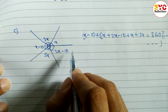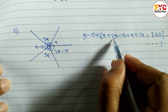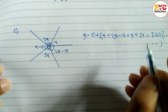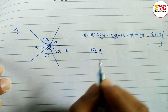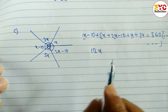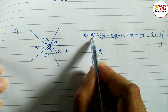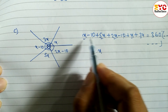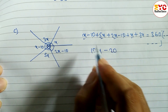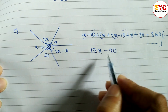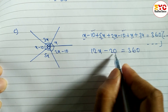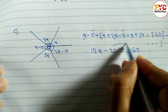Adding the like terms: 5x plus x is 6x, plus 2x is 8x, plus 1 is 9x — wait, plus x is 9x, plus 3x is 12x. So we have 12x. For the constants: minus 10 minus 10 equals minus 20. So we write 12x minus 20 equals 360. These are unlike terms, so we take 20 to the right side.